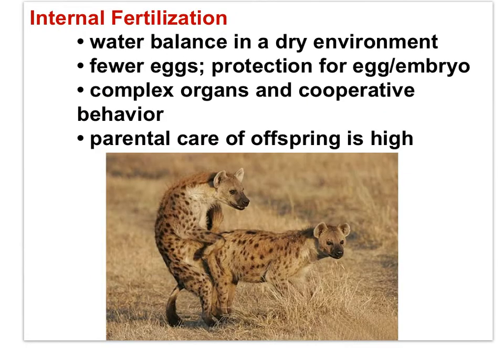The processes of internal fertilization provide inherent protection to the sperm, egg, and ultimately the embryo. Thus, with species like mammals and birds that utilize internal fertilization, fewer eggs are produced, and the embryos are protected, and substantial parental care is invested in the offspring. Internal fertilization requires complex cooperative behaviors between the male and female to bring the sperm and egg into close proximity, and it involves complex internal organs required for that protection. In a terrestrial environment that is inherently dry, where the threat of dehydration is high and water balance is critical to survival, internal fertilization is quite adaptive.